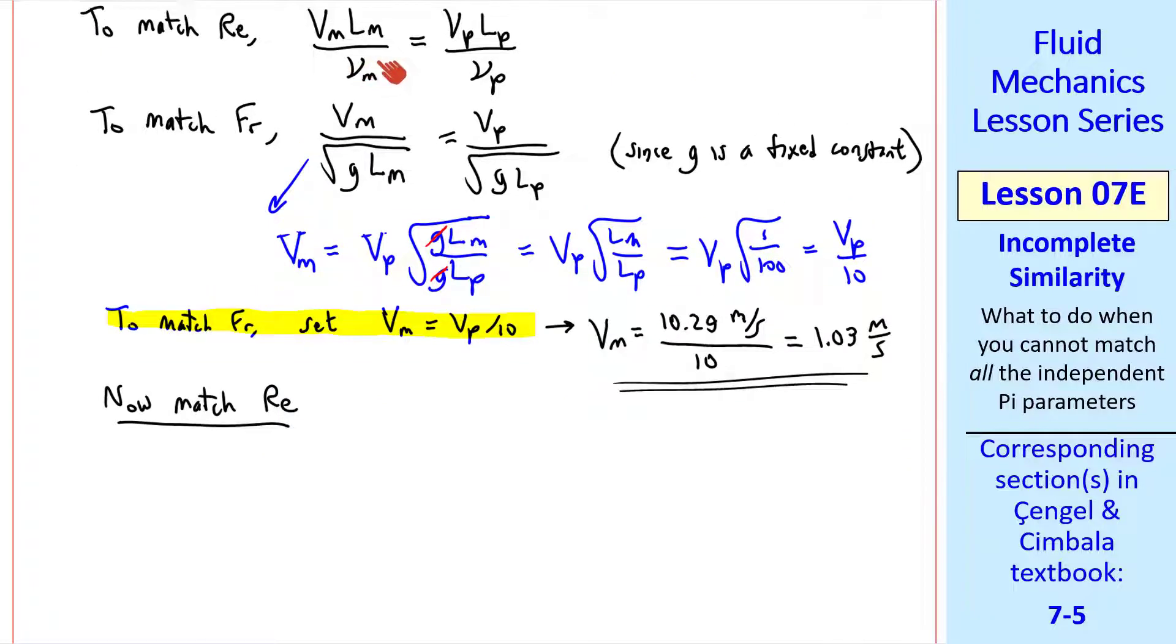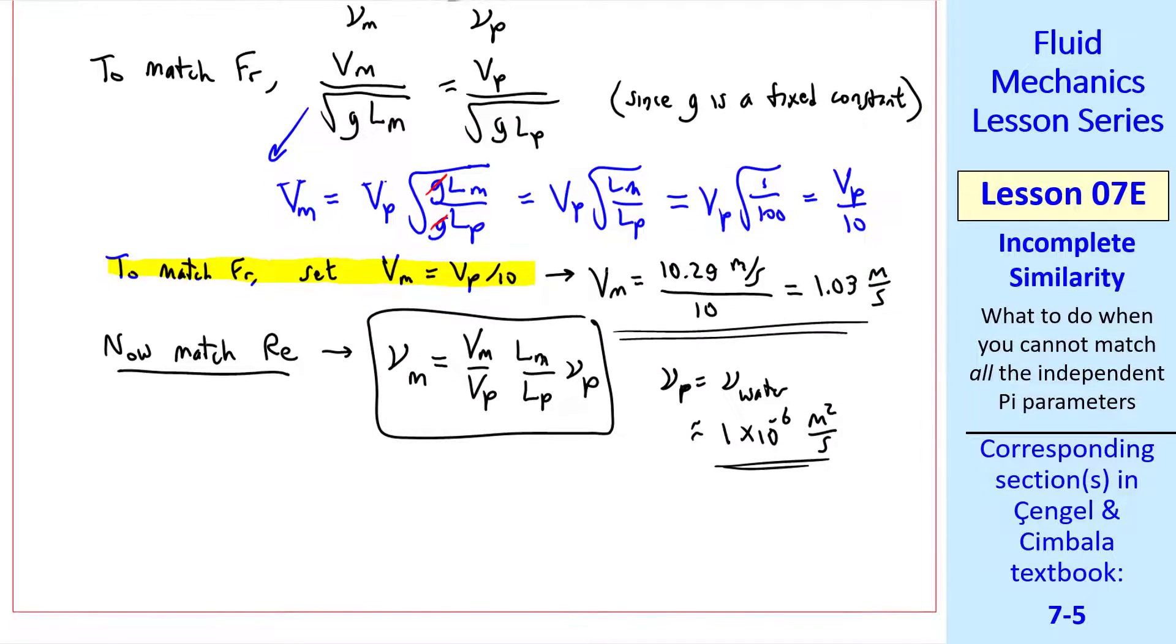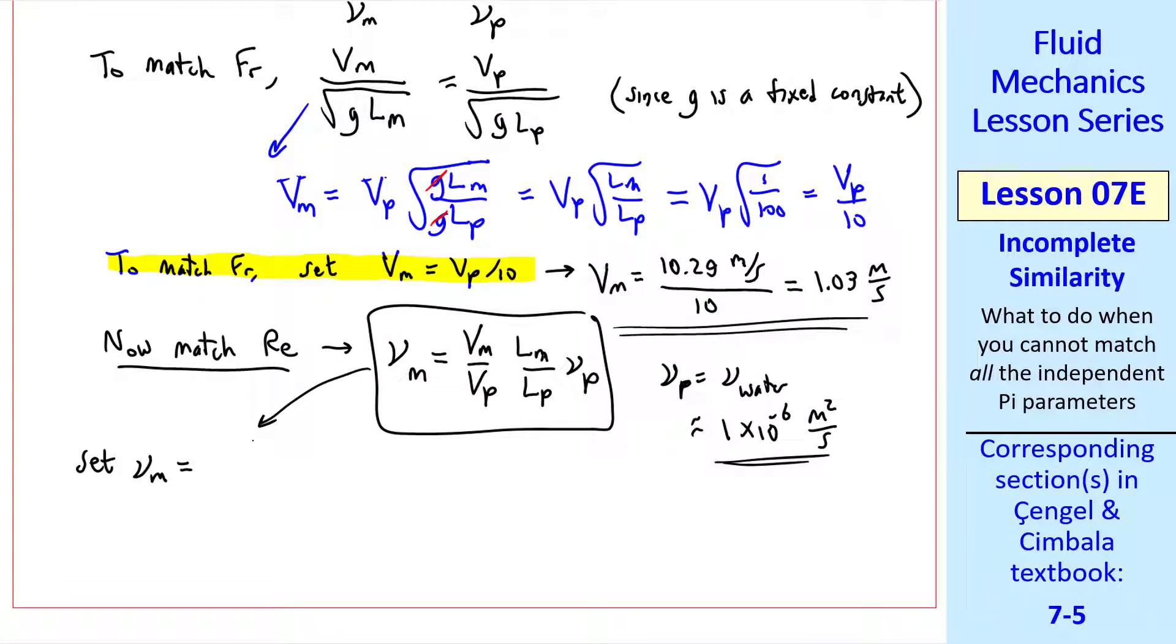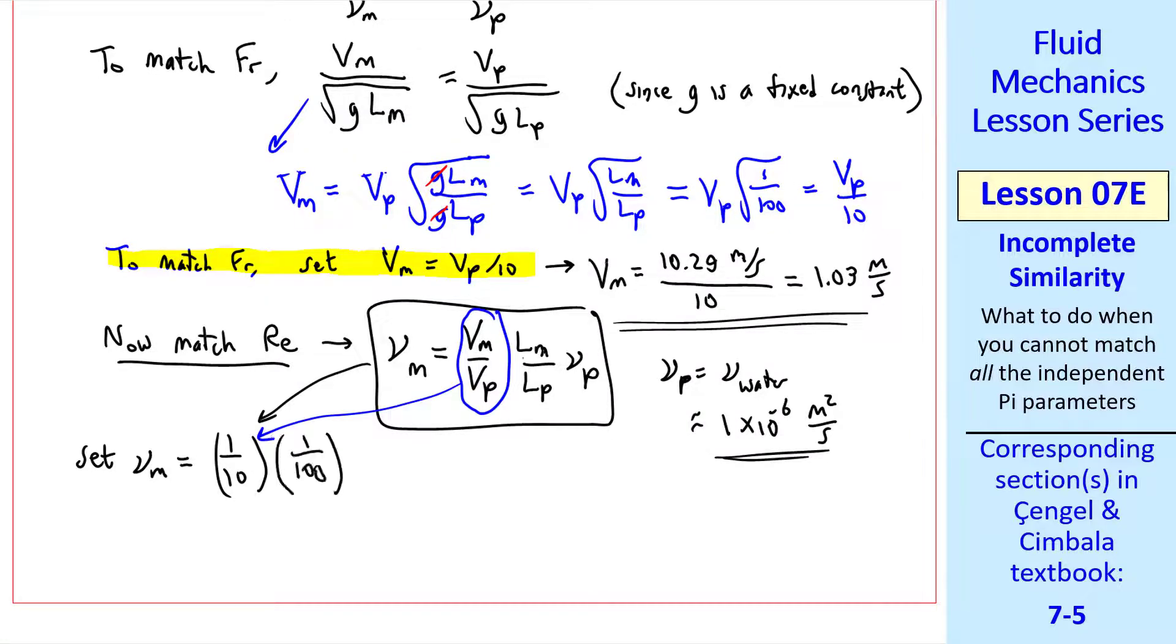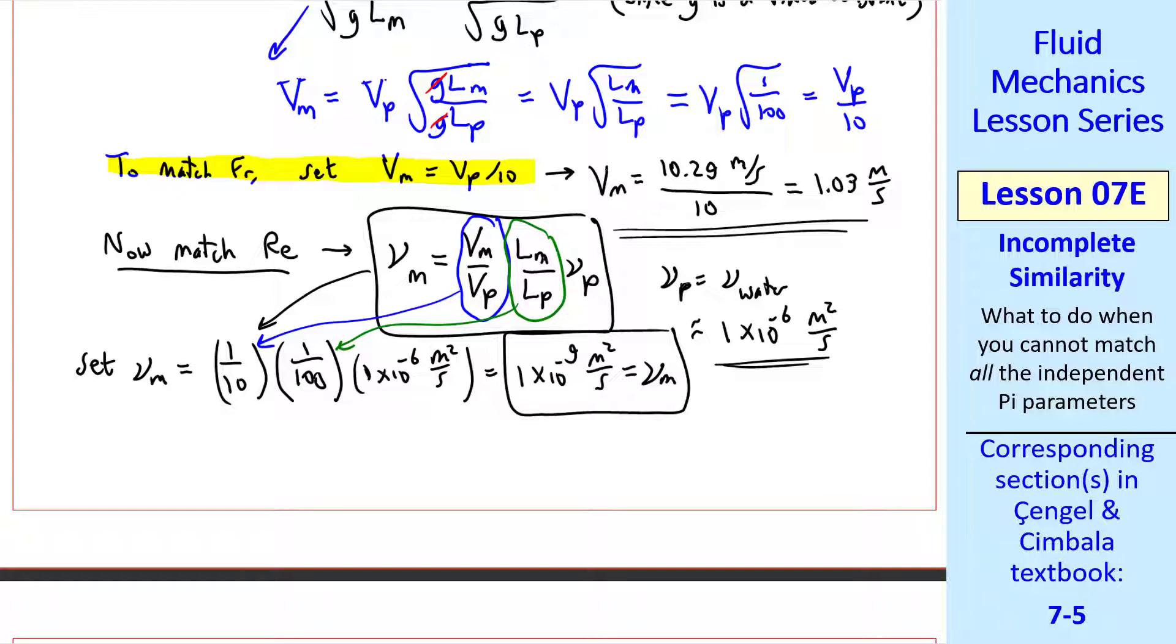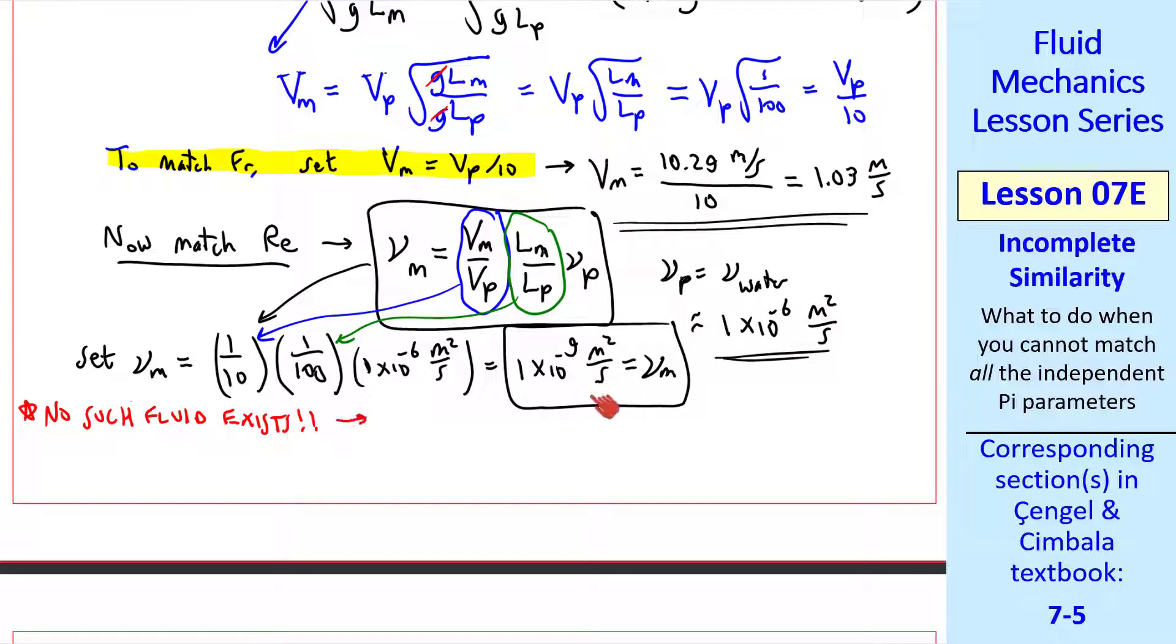Now let's match the Reynolds number. From this equation up here, we know the ratio of l_m and l_p and the ratio of v_m and v_p. So the only way to match Reynolds number is to use an appropriate kinematic viscosity. Let's solve this equation for nu_m, the model kinematic viscosity. We get nu_m = (v_m/v_p)*(l_m/l_p)*nu_p. Well, nu_p is nu of the water, which is on the order of 1×10^-6 meters squared per second. So plugging in our numbers, we set nu_m = (1/10)*(1/100)*nu of water. In other words, we have to use a fluid that has a kinematic viscosity of 1×10^-9 meters squared per second. The problem is that no such fluid exists. No fluid has this small of a kinematic viscosity. So we cannot achieve dynamic similarity.